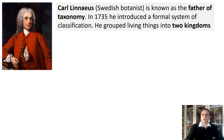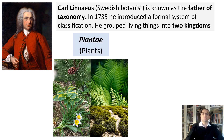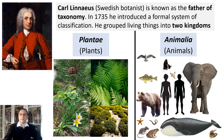Carl Linnaeus, Swedish botanist, is known as the father of taxonomy. In 1735, he introduced a formal system of classification. He grouped living things into two kingdoms: Kingdom Plantae — plants — which includes both flowering and non-flowering plants, ferns, and mosses; and Animalia — animals. Note that he used Latin to classify organisms.